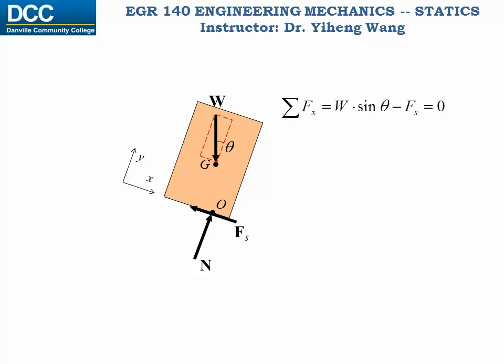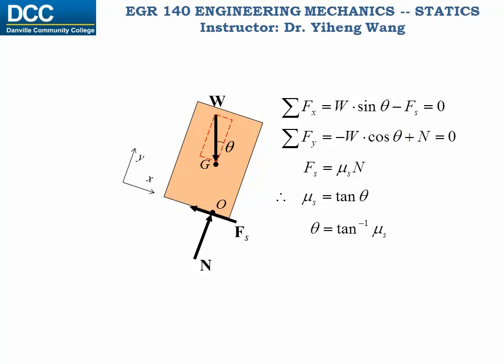The resultant force along the x direction equals W·sin(θ) − Fs = 0, and the resultant force along the y direction equals −W·cos(θ) + N = 0. Because we are calculating for the situation when sliding is about to happen, the static frictional force equals the limiting value Fs = μs·N. Combining these three equations gives μs = tan(θ), so θ = arctan(μs). This angle has nothing to do with the dimensions or the weight of the crate — it is simply determined by the coefficient of static friction μs.